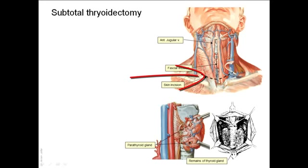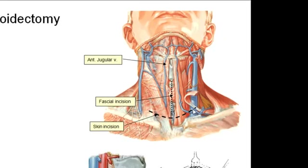First of all, there is a transverse incision in the skin above the suprasternal notch. It is transverse so that it is parallel to the Langer's lines, which are circumferential in the neck, in order to avoid too much granulation tissue and an ugly scar during healing.